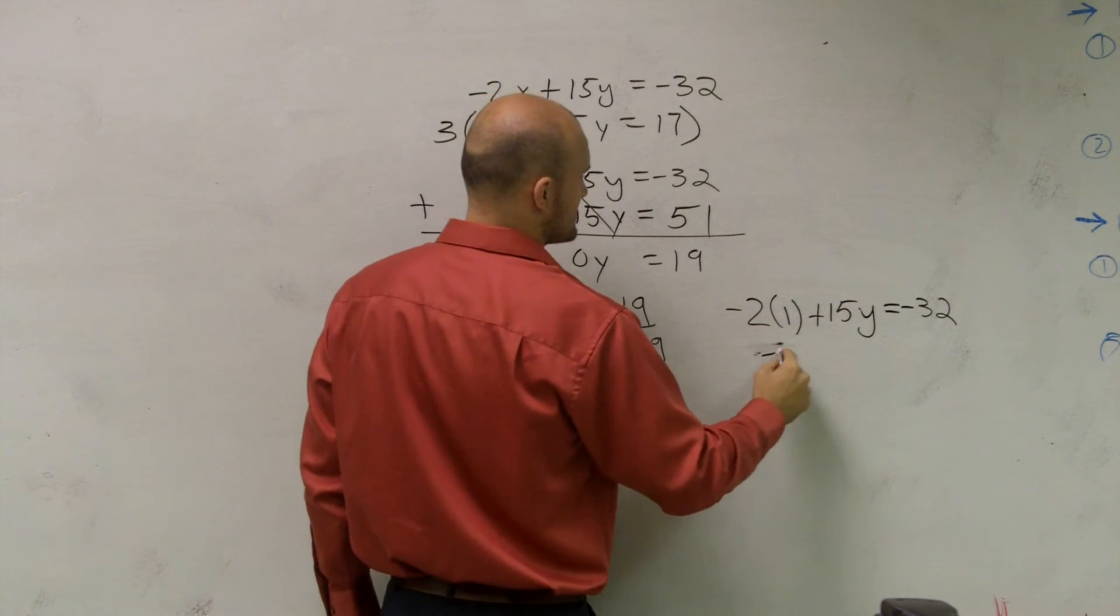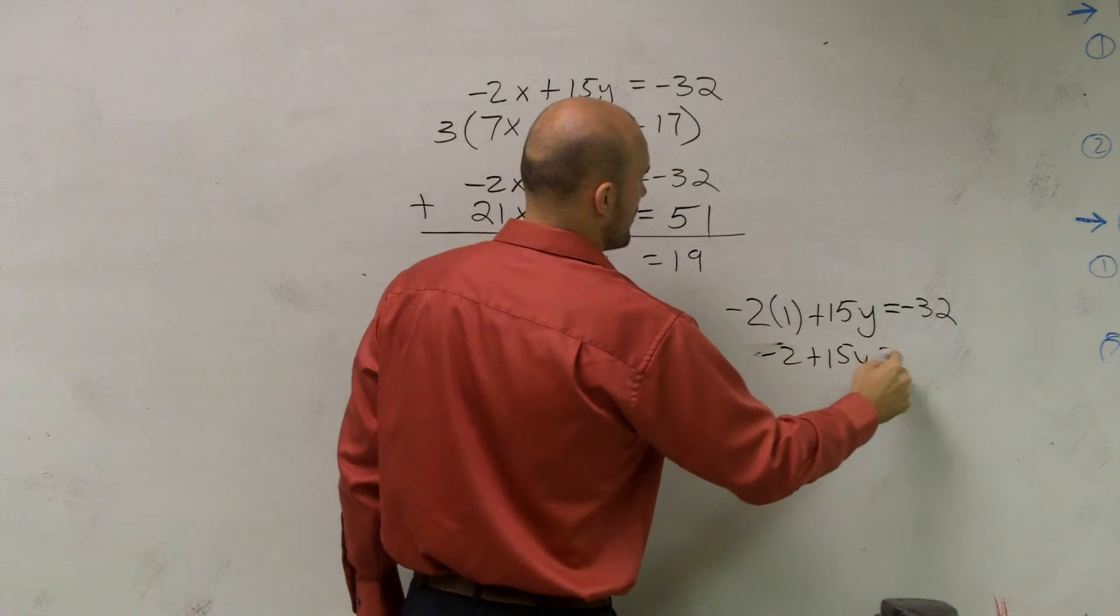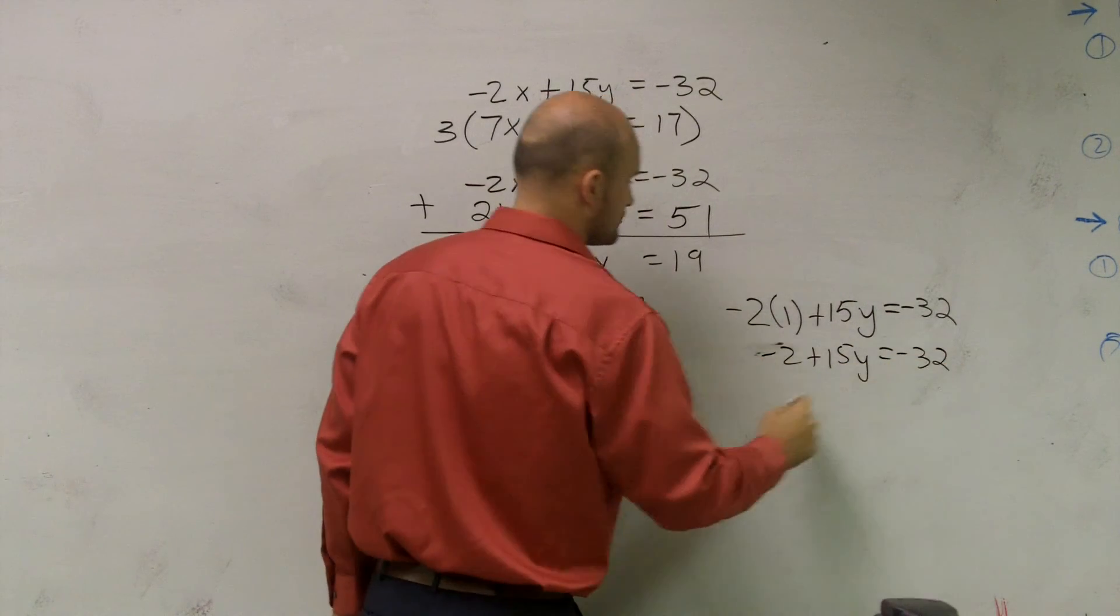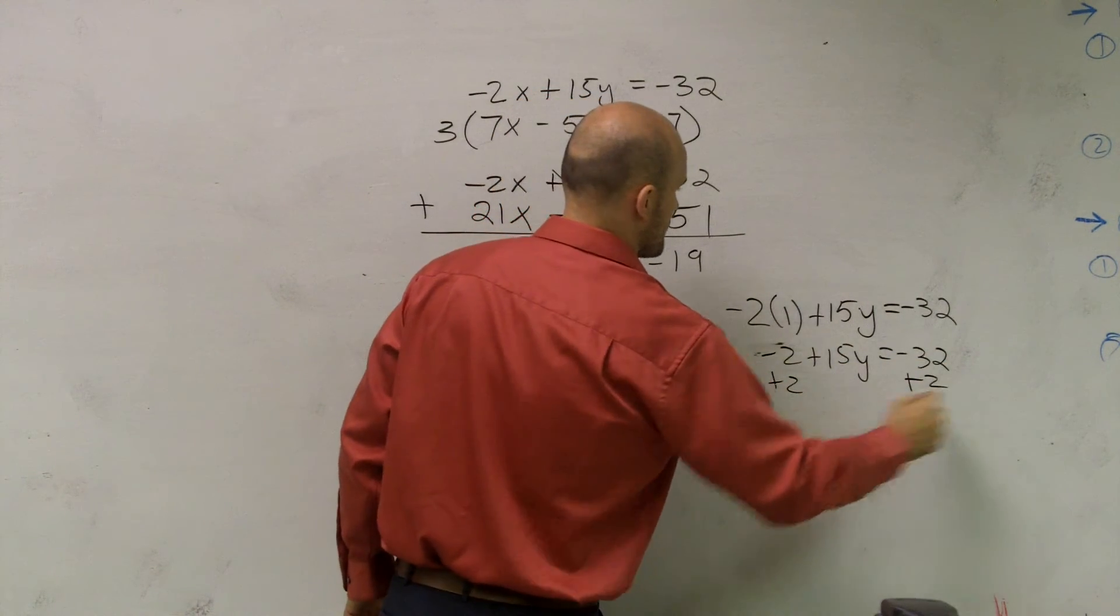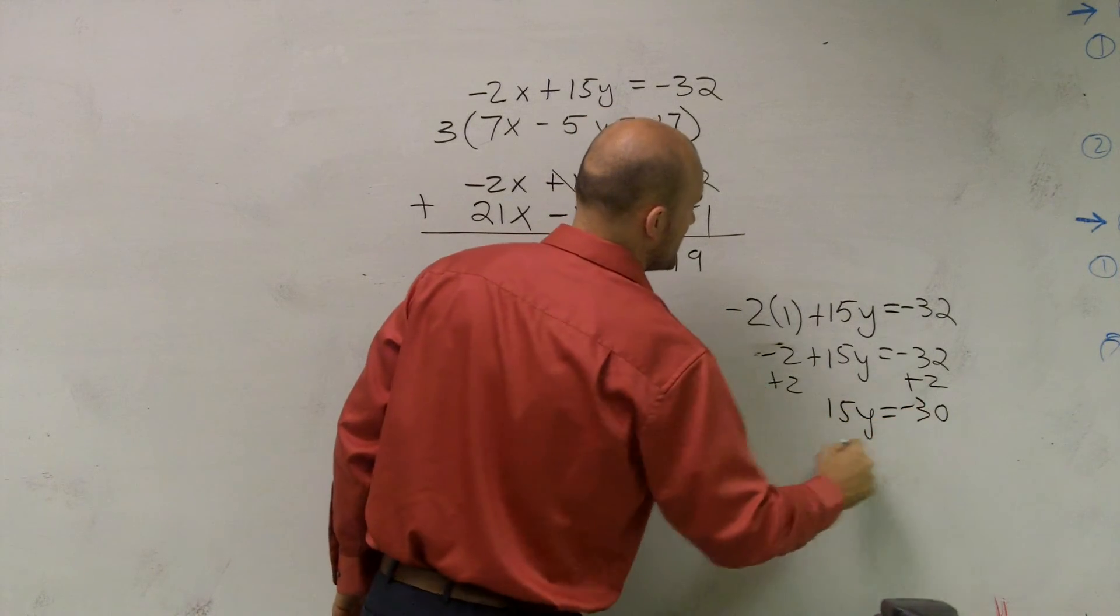Negative 2. So what I'll do, that becomes negative 2 plus 15y equals negative 32. Add 2. 15y equals negative 30.